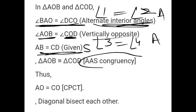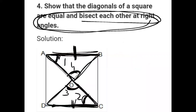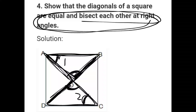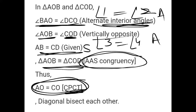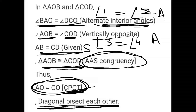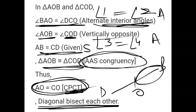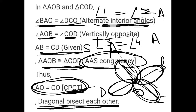So what rule is applied? AAS rule. AAS rule means the whole triangle is congruent. If the triangle is congruent, it means every side is equal. So by AAS, triangle AOB is congruent to triangle COD. Therefore, OB equals OD and OA equals OC — so the diagonal bisects each other.